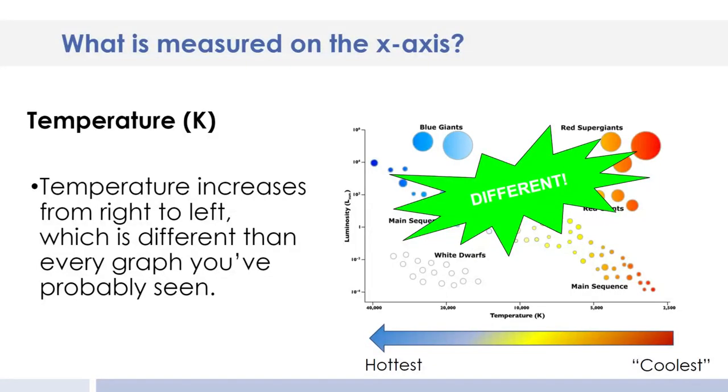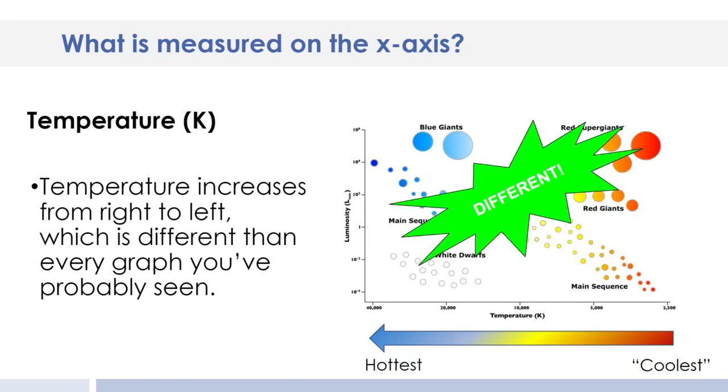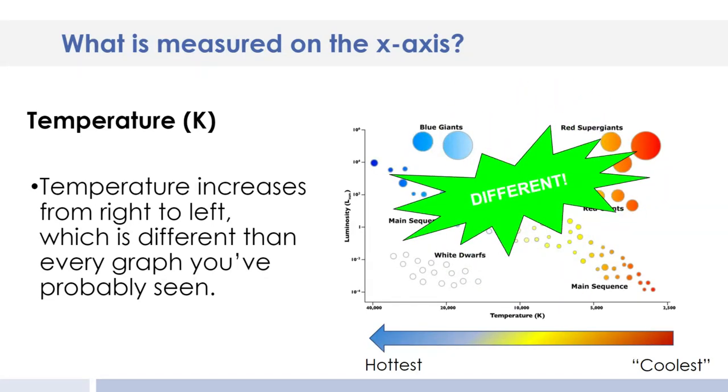Just to give you an idea, 2500 Kelvin is about 4,400 degrees Fahrenheit, so very hot. But please make sure you stop in your notes and make a note of this difference in the x-axis.